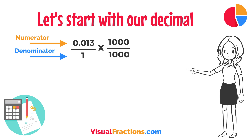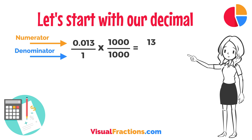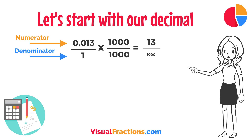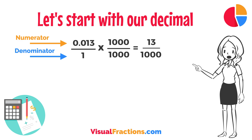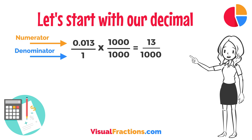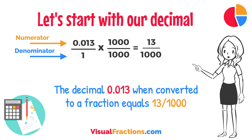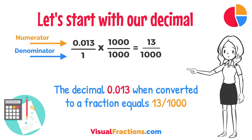So, 0.013 times 1,000 gives us 13, and 1 times 1,000 gives us 1,000. This translates 0.013 to the fraction 13 over 1,000. And there you have it — the decimal 0.013 when converted to a fraction equals 13 over 1,000.